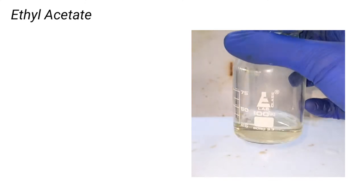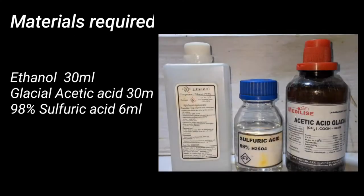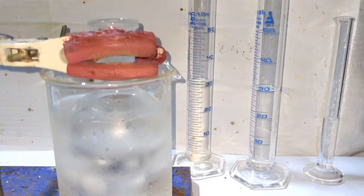Materials required for this preparation include 30 milliliters of 96% ethyl alcohol, 30 milliliters of glacial acetic acid, and 6 milliliters of 98% sulfuric acid. Here we have the reaction vessel, a 100 milliliter round bottom flask, and all the chemicals pre-measured and lined up.